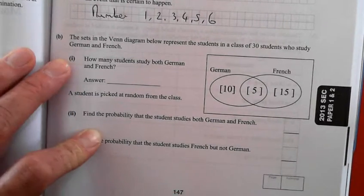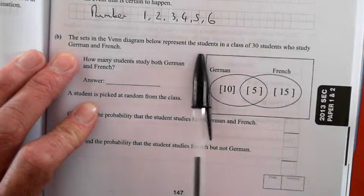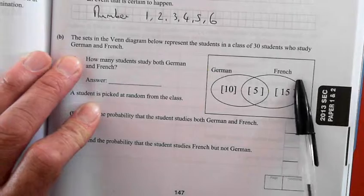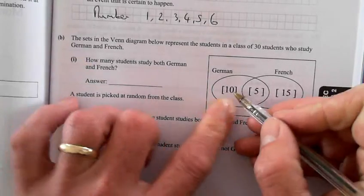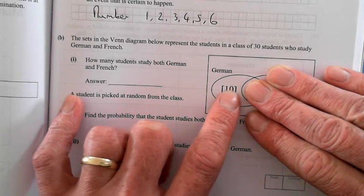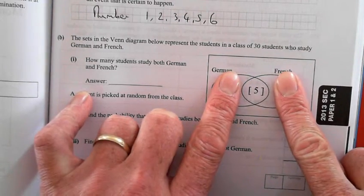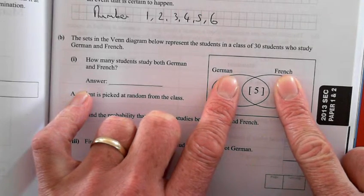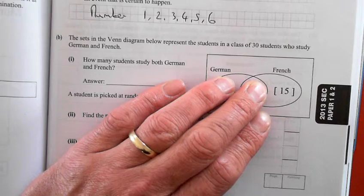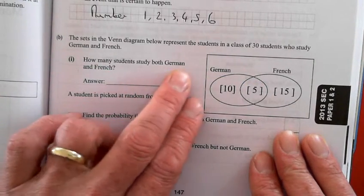The Venn diagram below represents the students in a class of 30 students who study German and French. The 10 here are people who study German and don't study French. The five in the middle are people who study German and French. The 15 over here are people who study French but not German. How many students study both German and French?